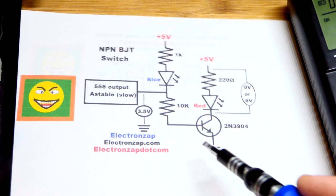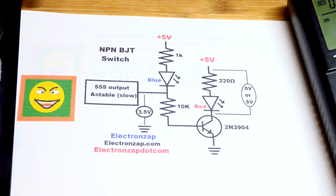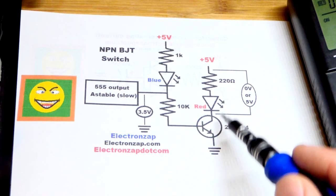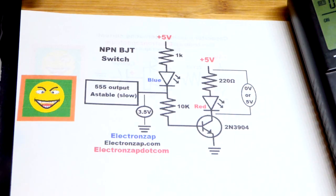So now in this video we're going to look at the NPN bipolar junction transistor wired as a switch. It's either on and the LED is lit there or it's off and the LED is not lit there.